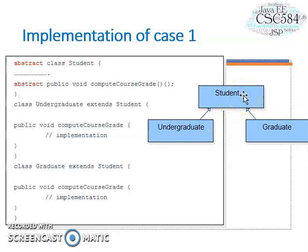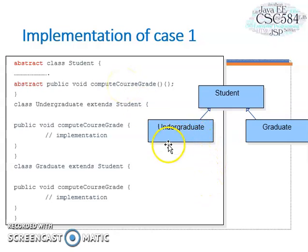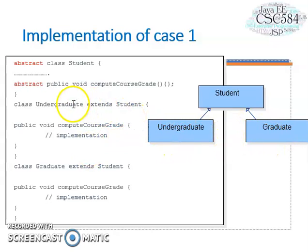In this virtual representation of case one, student is the parent class declared as abstract. We also have one abstract method, computeCourseGrade, which is shared by both undergraduate and graduate classes. Both undergraduate and graduate are child classes of student, so we declare: class Undergraduate extends Student and class Graduate extends Student.